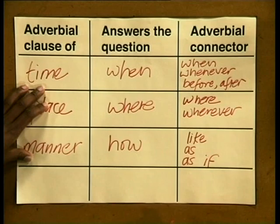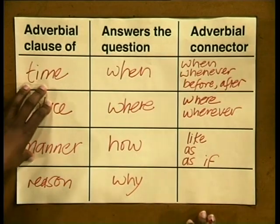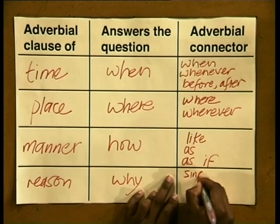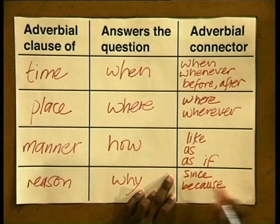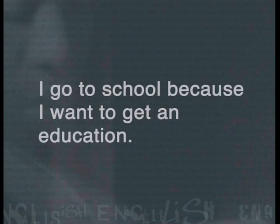By now, you should see a pattern that the adverbial clause tells us how, when, or where the verb happens. Let's look at the next type of adverbial clause, which tells us why the verb occurs. It's known as the adverbial clause of reason, and it can be introduced by the words: since, because, or as. An example is: 'I go to school because I want to get an education.' The subordinate clause is introduced by 'because,' and then a reason for the main clause is provided: 'I want to get an education.'